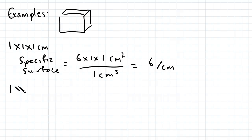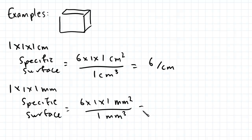So let's say now we have a 1 by 1 by 1 millimeter cube. The specific surface will work out to be, so 6 by 1 by 1 square millimeters, divided by 1 cubic millimeter. And this works out to be 6 units per millimeter.